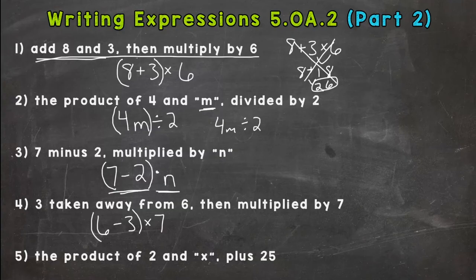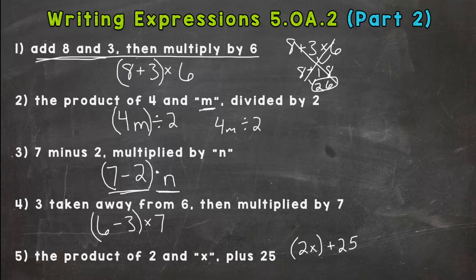Number five, the product of 2 and X, plus 25. So product of 2 and X, I'm going to put 2X. Remember, number next to a letter means multiply. Plus 25. Let me double check my work here. Product of 2 and X. All right, there we go. And then plus 25. So we're good to go with that one.